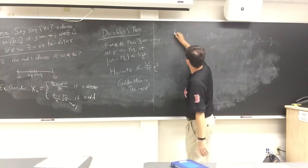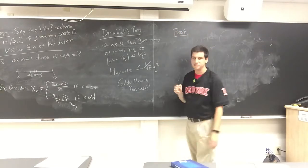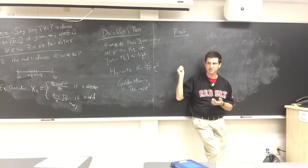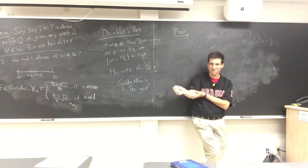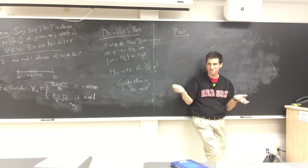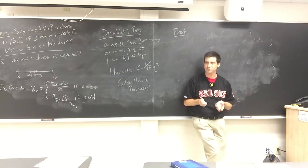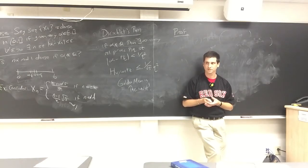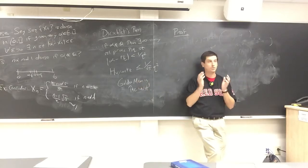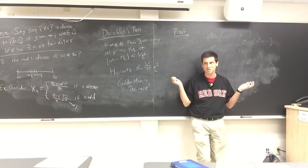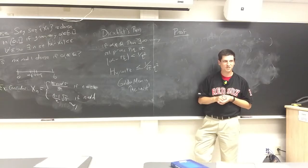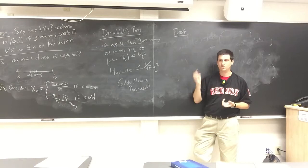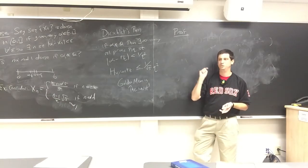Let's prove Dirichlet's theorem. The key tool is the pigeonhole principle: if you place n+1 pigeons in n boxes, at least one box must contain 2 or more pigeons. If every box had at most one, that would account for only n pigeons — but we have n+1. This is one of the most useful observations in mathematics, also called the box principle or Dirichlet's box principle.